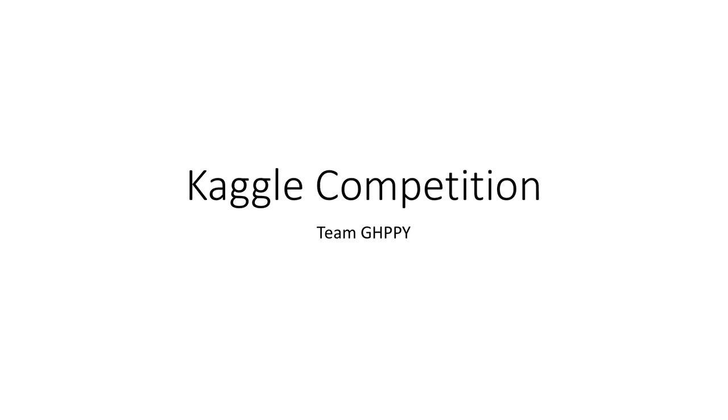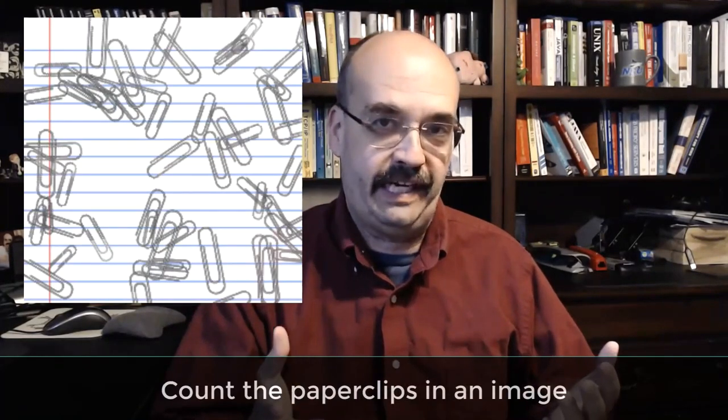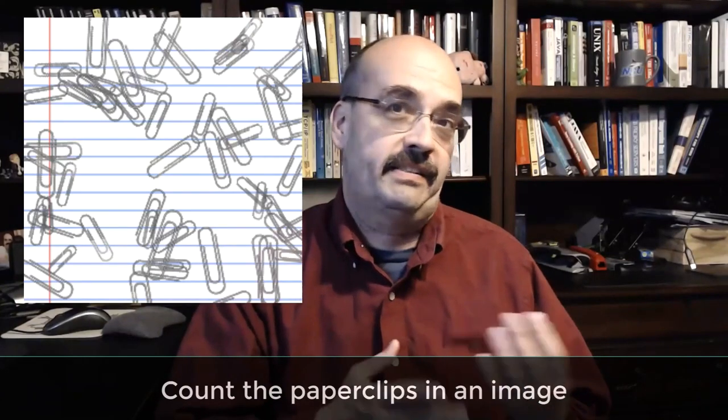In this one, we're going to look at team GHPPY, which is the team that got the best RMSE of the class and were therefore the winners of the Kaggle competition. In this competition, they were tasked to count the paper clips in an image. This is very applicable to the real world. They could be counting cars or houses or something from a satellite image or other things. What I'm going to show you here is their solution.